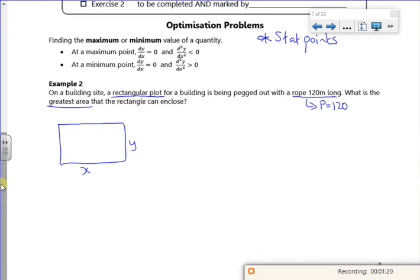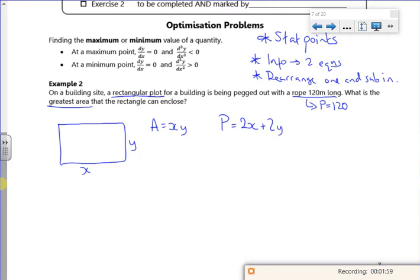Right, so the way these work is we tend to have information for two equations and I rearrange one and sub it in the other. So I know that the area is xy. I also know that the perimeter is going to be 2x plus 2y, but I've been told that that's 120. Now because you've been told that's 120, this is the equation that I'll rearrange. Now all I need to do is decide which one I'm going to replace and it doesn't really matter. I can replace the x or I can replace the y. We tend to like solving things with x's, so let's rearrange this for y.